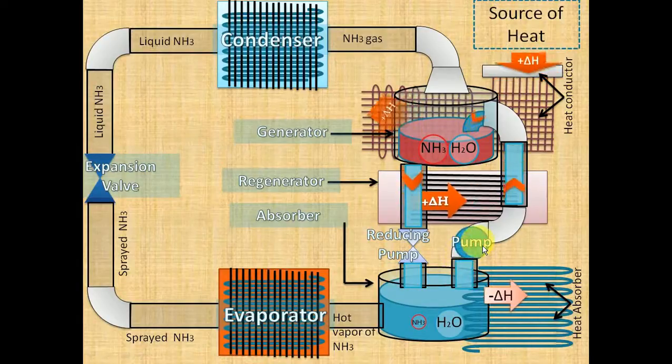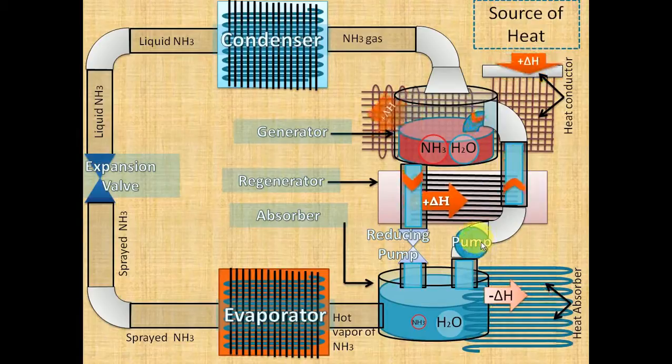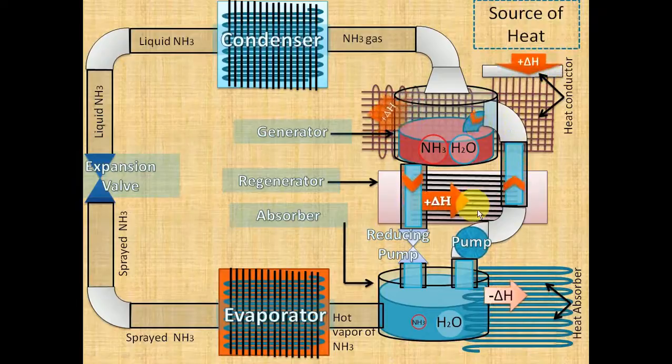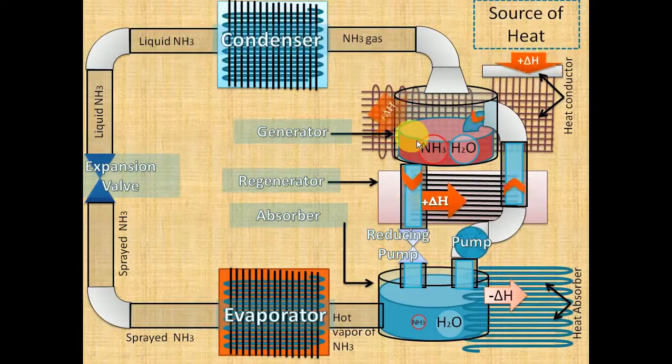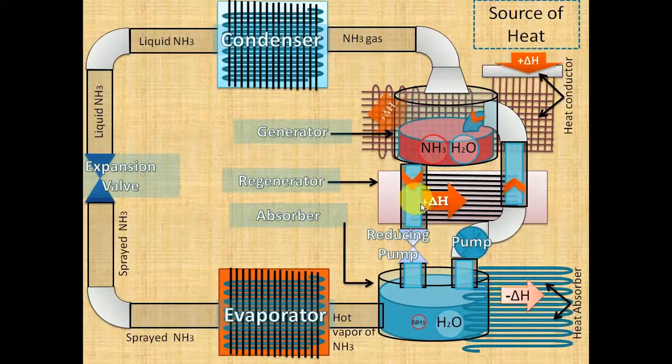This pump is pulling the solution from absorber to the generator through regenerator. This reducing pump is pulling solution from the generator to the absorber through regenerator.